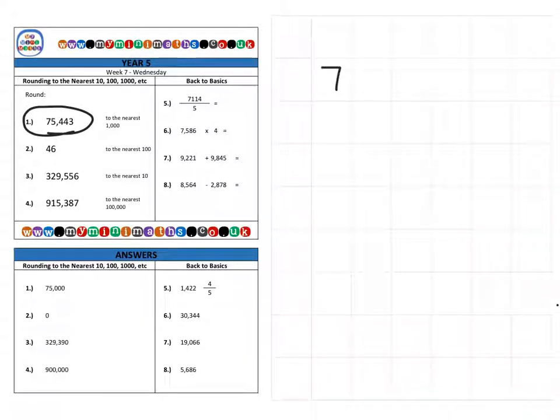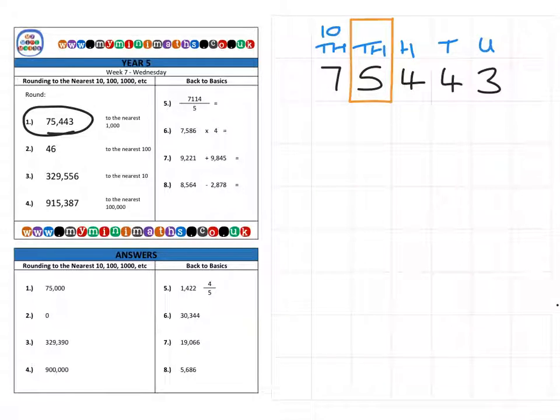Question one is 75,443 and we're going to be rounding this to the nearest 1,000. The first thing we need to do is label those columns: the units, tens, hundreds, thousands, and finally the 10,000s. We're going to be rounding to the nearest 1,000.